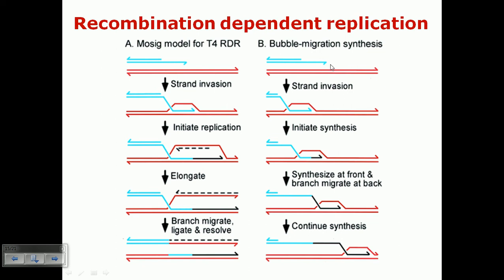This recombination is only possible because both DNA molecules share similar sequences in the terminal redundancy regions. In the bubble migration model, strand invasion also occurs and synthesis initiates, but synthesis occurs in one direction — synthesizing forward while branch migration occurs at the back. After synthesis of the whole strand, the other strand invades and synthesizes in its own way. These are the two models explaining how recombination takes place during the second phase of T4 replication.